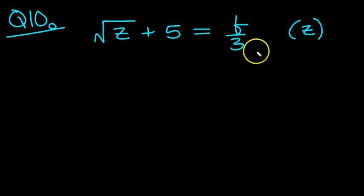Root z plus 5 equals b over 3, and we need to solve this for z. Here's the term involving z. Simply move the 5 over then.